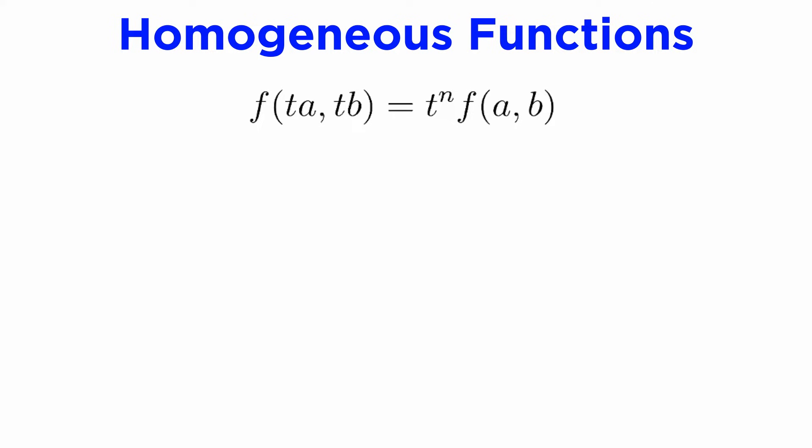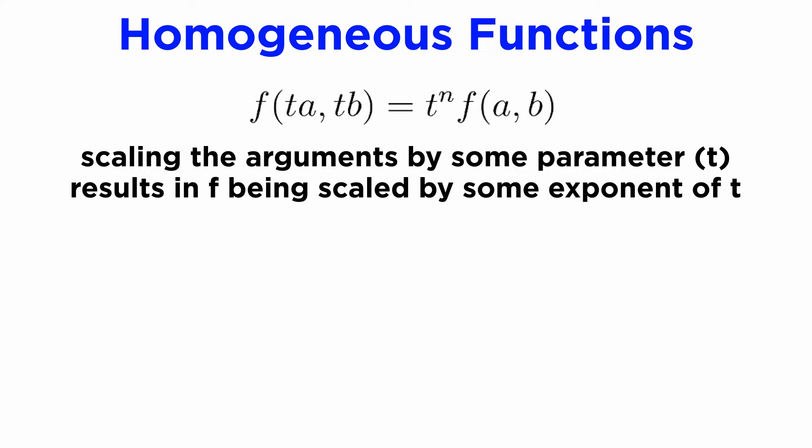Firstly, we need to define a homogeneous function. We say that a function f of two arguments a and b is homogeneous if scaling the arguments by some parameter t results in the value of f being scaled by some exponent of the parameter. Symbolically, f is homogeneous if f of ta, tb is equal to t to the n times f of a, b, where n is a constant known as the order of f.